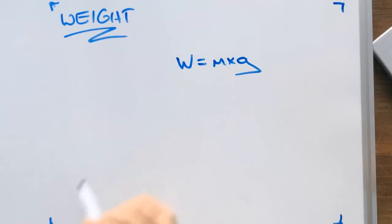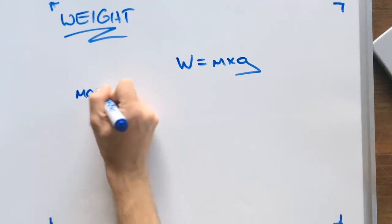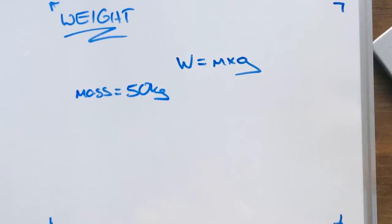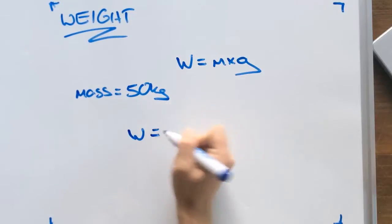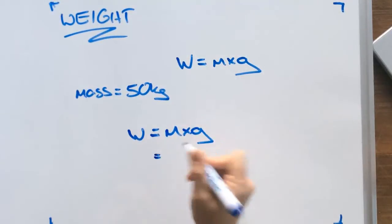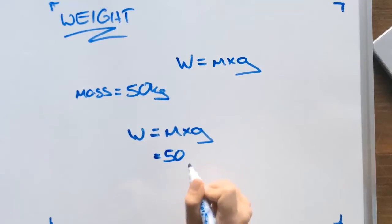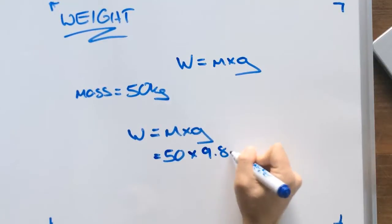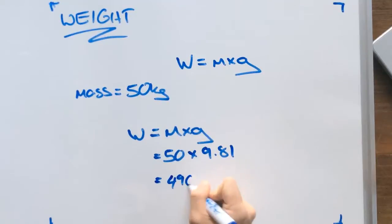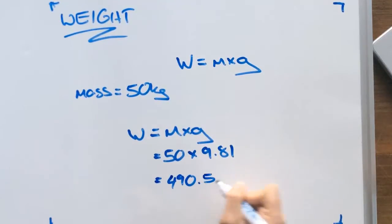So if we have a person with a mass of 50 kg, what would their weight be? Using our formula, weight equals mass times gravity, we can put in our mass and multiply by 9.81 for our gravity. We can figure out that our person has a weight of 490.5, and our units are Newtons.